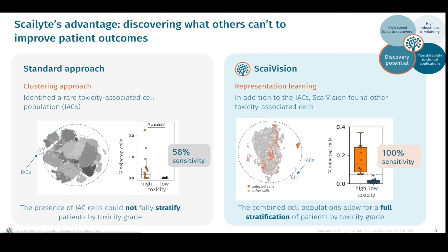This example highlights the advantage of keeping the single cell resolution throughout the analysis and the sensitivity of Skyvision to find differences in two datasets, particularly single cells and complex signatures. To translate this into a clinically relevant setting, if Skylight's approach would have been applied in the original R&D setting, these patients would have been identified prior to treatment for better risk assessment. Skylight's analysis would also have contributed to de-risking the clinical trial and allowed for a more successful outcome.